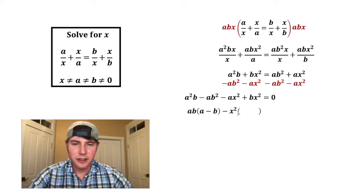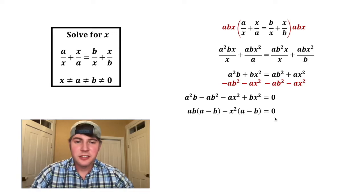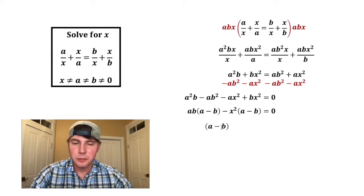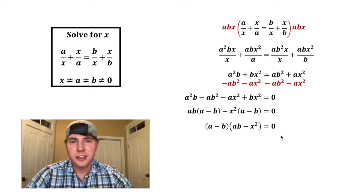And for this one let's pull out a negative x squared. Negative x squared times what gives us this — so that's just a — and negative x squared times what gives us this — that's negative b. And this is still equal to zero. Since these two are the same, we know factor by grouping is going to work. We're going to factor out this (a minus b) term, and then what's left is (ab minus x squared), and this is still equal to zero.